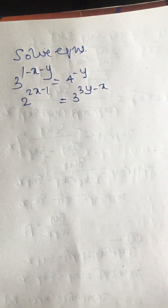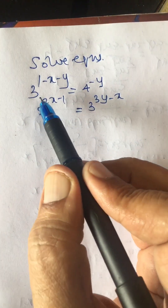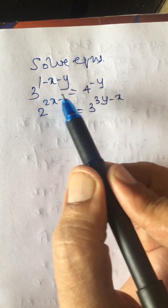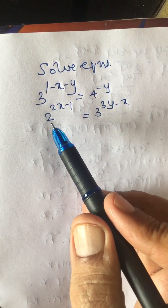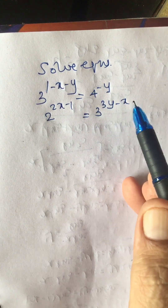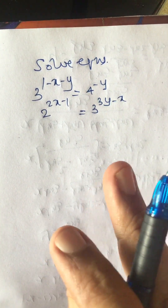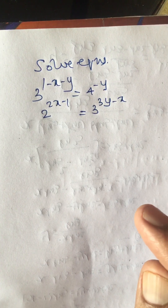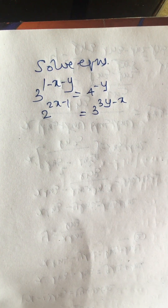Dear friends, welcome to my channel. Today in this video we will solve exponential equations: 3 raised to the power 1 minus x minus y equal to 4 raised to the power minus y, and 2 raised to the power 2x minus 1 equal to 3 raised to the power 3y minus x. Our approach will be to take log of these two equations, get two equations in x and y, and then solve them.